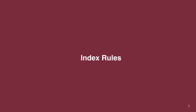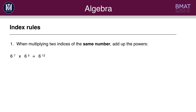We will now go through some index laws which are very important. First of all, when multiplying together two indices of the same number you should add together the powers. So for example 6 to the power of 7 times 6 to the power of 5 equals 6 to the power of 12. This only works when the base number is the same — the powers don't have to be the same, but the number being raised to a power has to be the same.